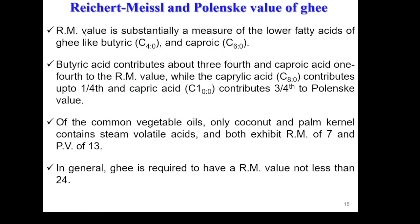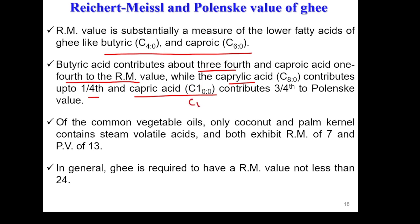The RM value is substantially a measure of the lower fatty acids of ghee, like butyric acid and caproic acid. Butyric acid contributes about three-fourths to the RM value, whereas caproic acid contributes one-fourth to the RM value. For the Polenske value, caprylic acid (C8:0) contributes one-fourth, while capric acid (C10:0) — which has no double bonds and ten carbon atoms — contributes three-fourths to the Polenske value.